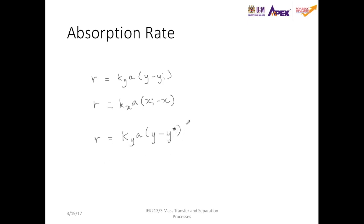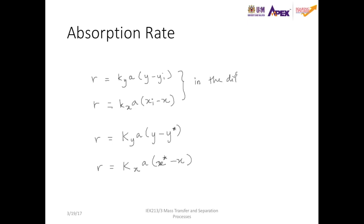This is for the gas phase, and from the liquid phase side it is capital Kx times A times (x* minus x). So the individual coefficient equations apply at different levels within the column, while the overall mass transfer equations apply to the entire column.